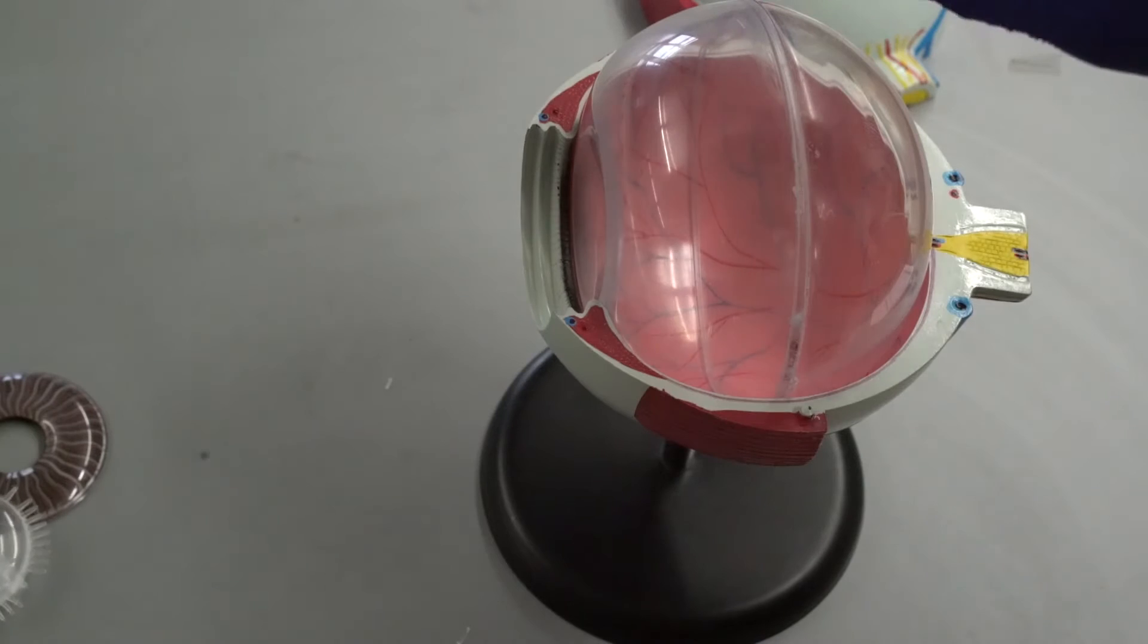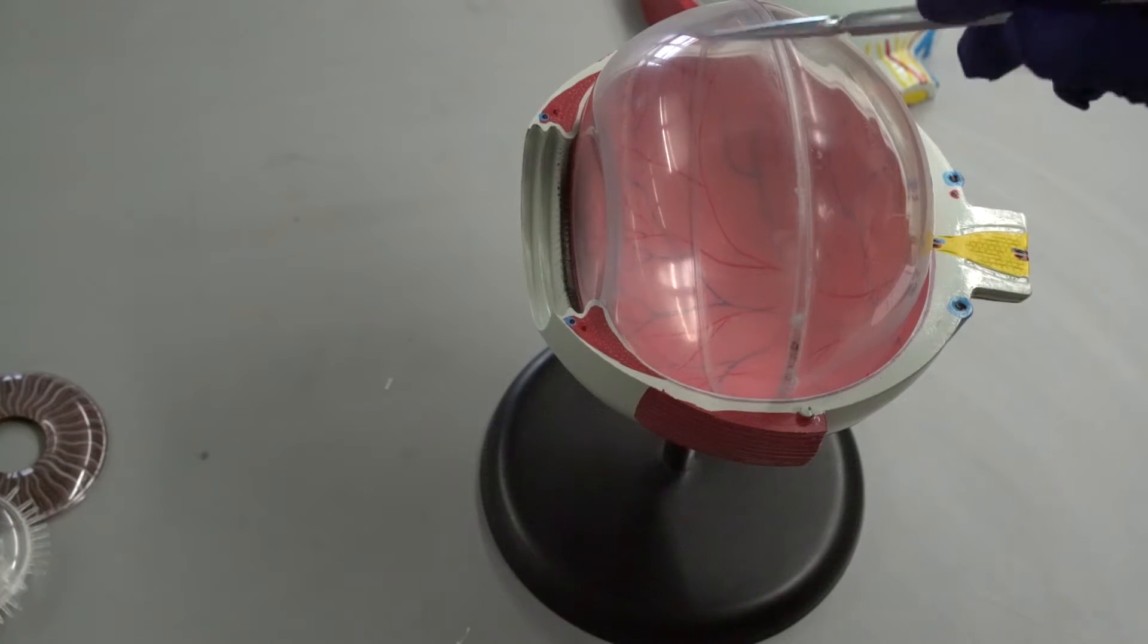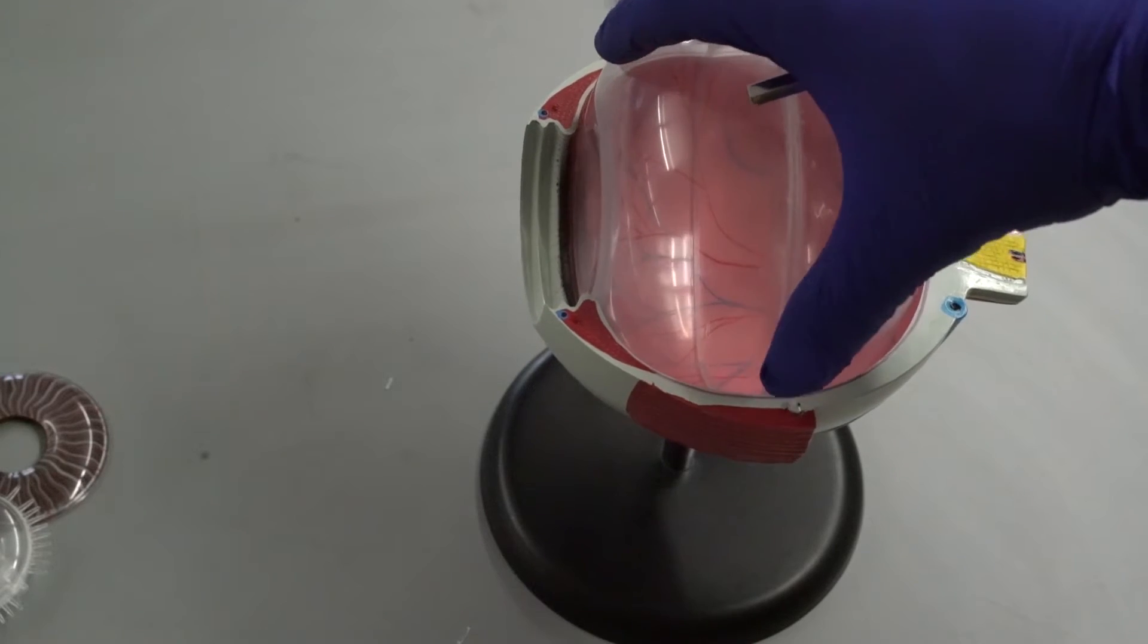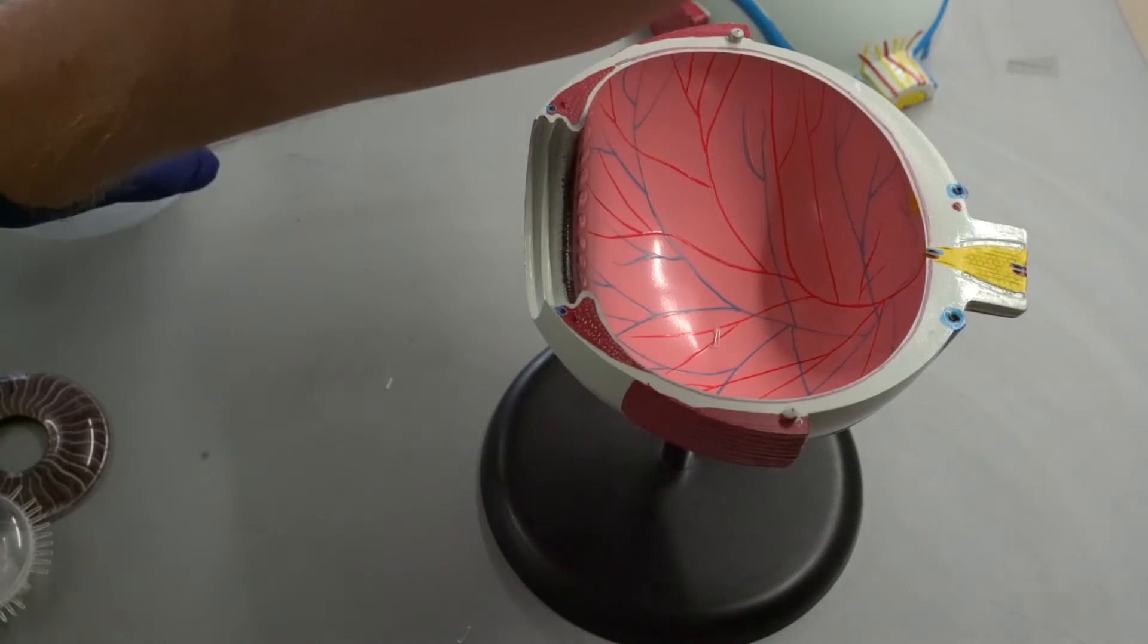So now moving the lens out of the way, we're going to have our vitreous humor. So light is going to pass through here. This is thicker than the aqueous humor. So I'm just going to move that. That's what that's representing.